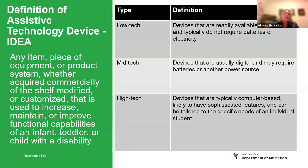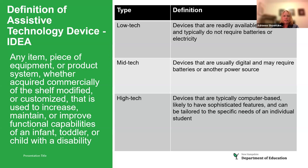The definition of assistive technology device, again per IDEA, is any item, piece of equipment, or product system, whether acquired commercially off the shelf, modified or customized, that is used to increase, maintain, or improve functional capabilities of an infant, toddler, or a child with a disability.